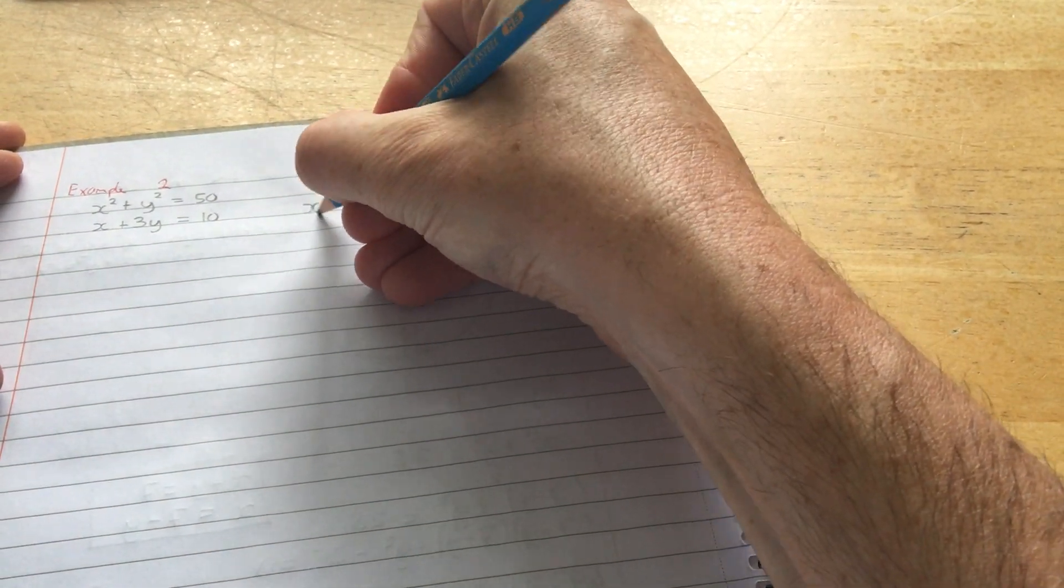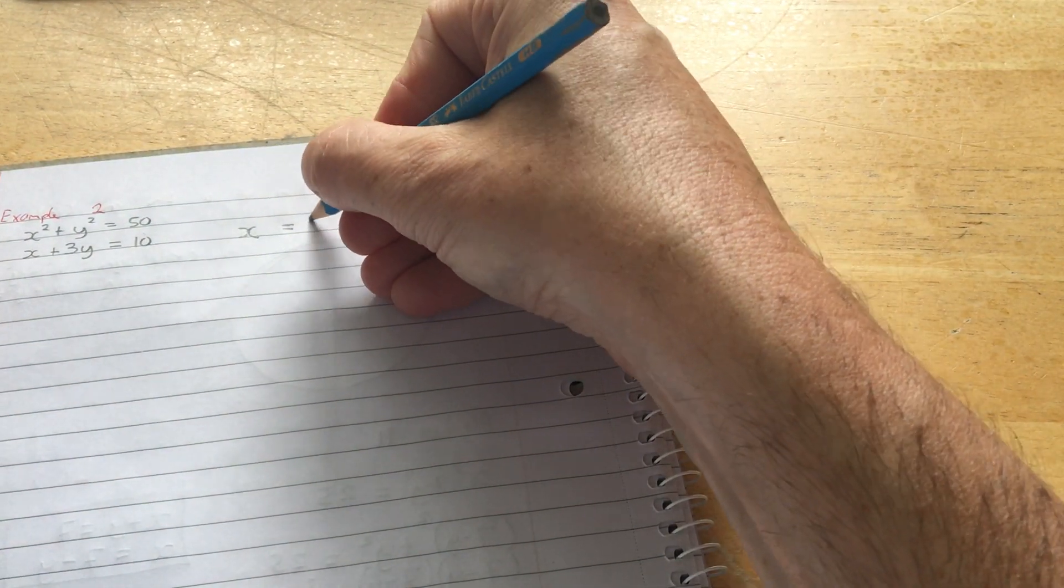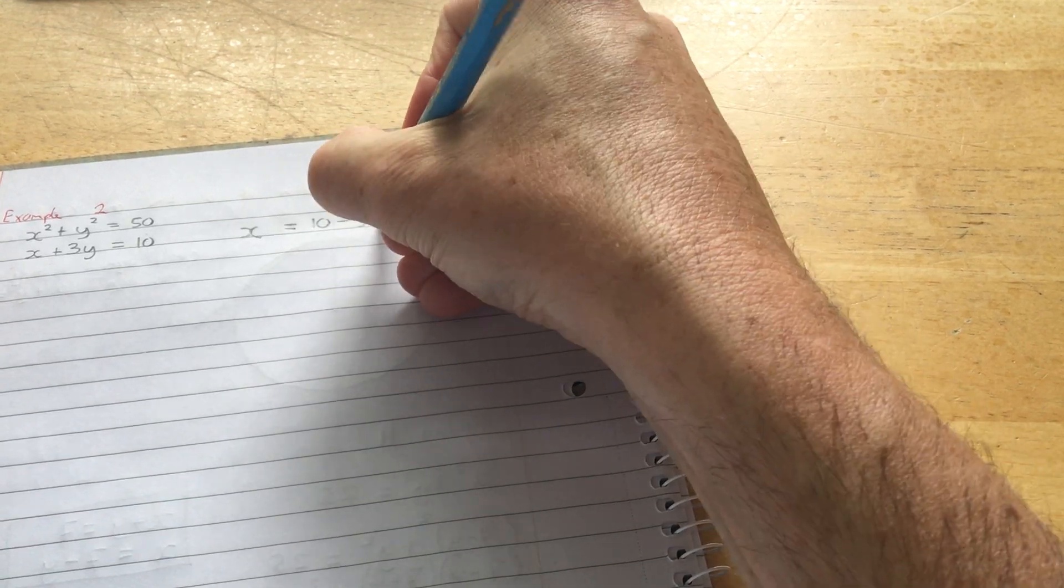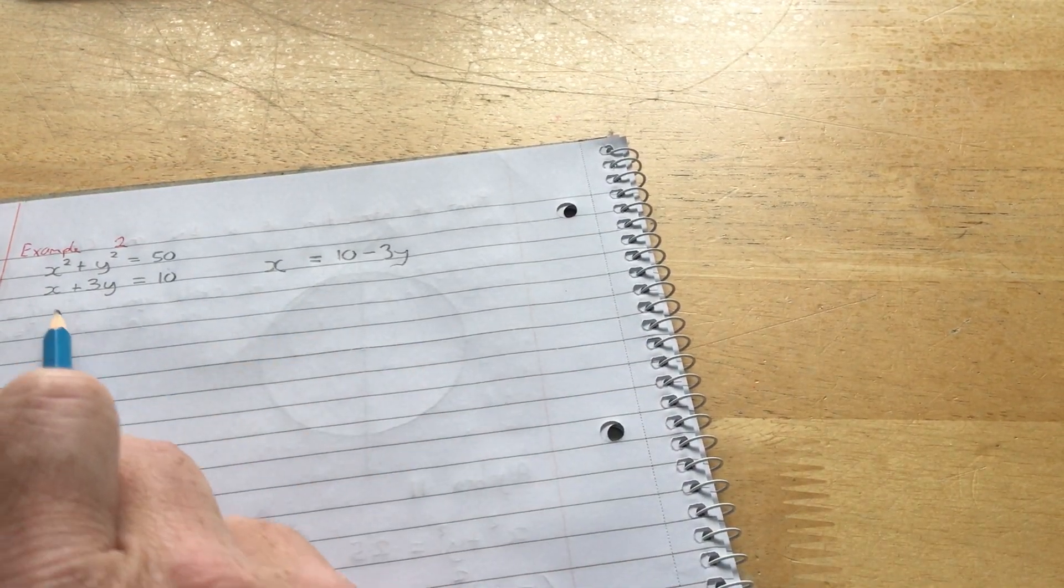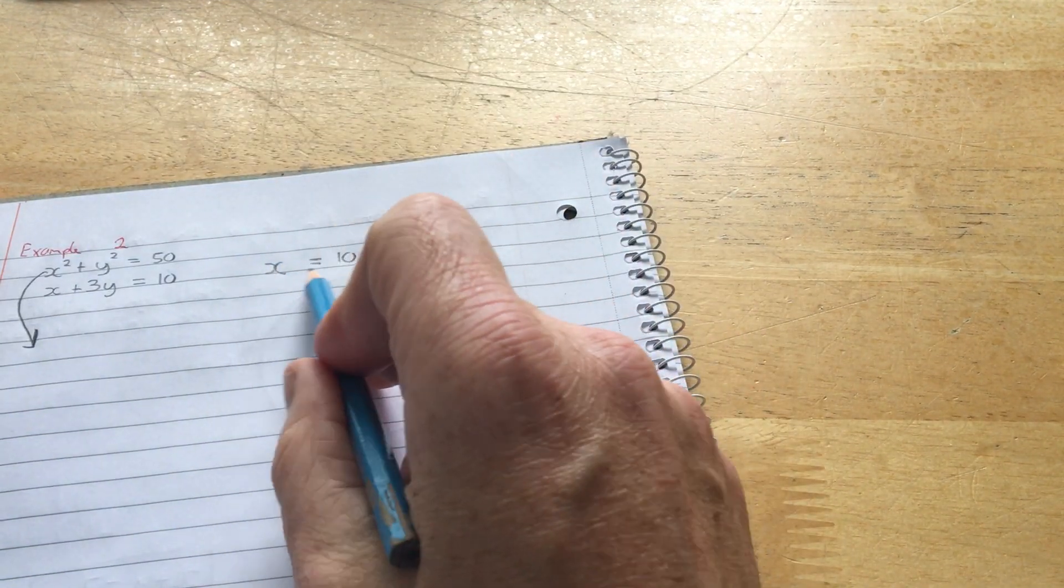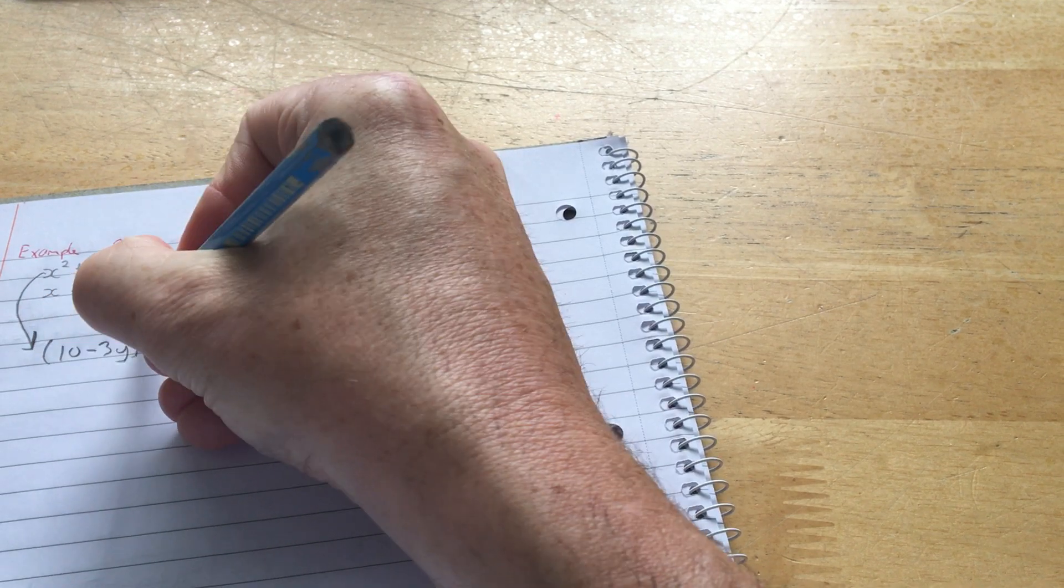What I do need to do is take the equation of the line and rewrite it. x equals 10 minus 3y. The reason I find x on its own is because it's just 1x here. It's easier to do. Take down this equation. Now that I know x is 10 minus 3y, I can replace x with 10 minus 3y and square it.